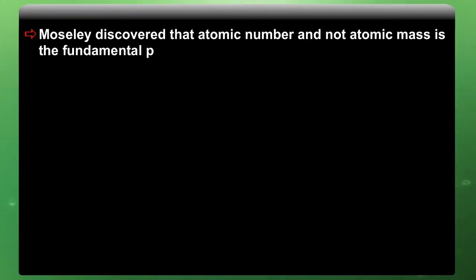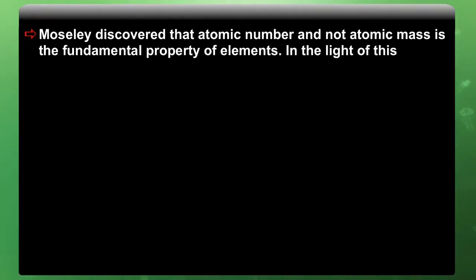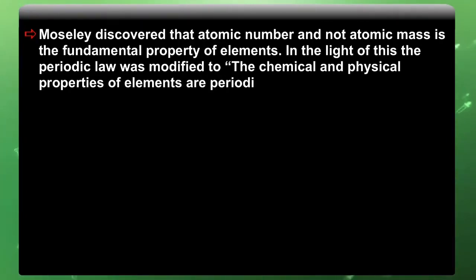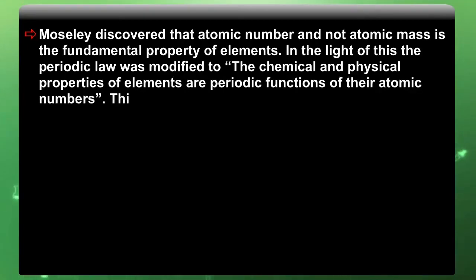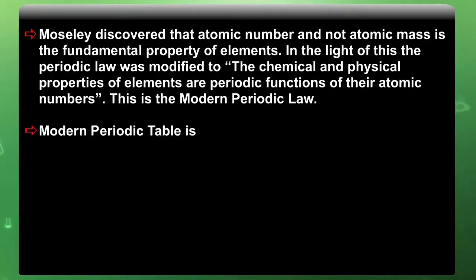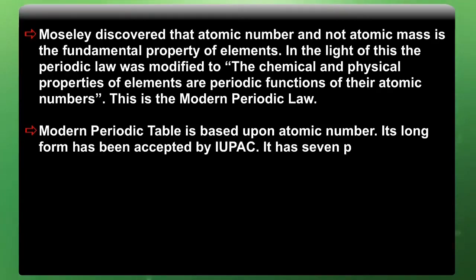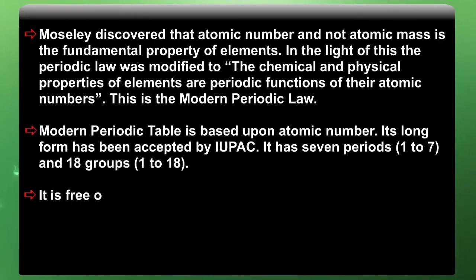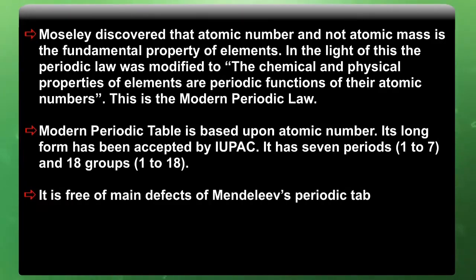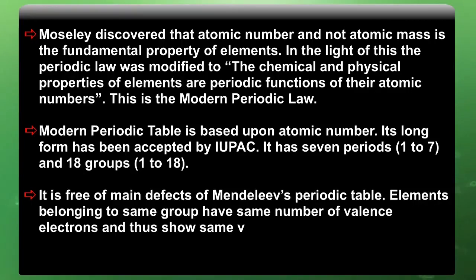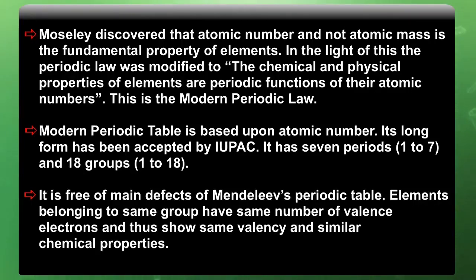Moseley discovered that atomic number and not atomic mass is the fundamental property of elements. In light of this, the periodic law was modified: the chemical and physical properties of elements are a periodic function of their atomic numbers. This is the modern periodic law. The modern periodic table is based upon atomic number; its long form has been accepted by IUPAC. It has seven periods (1 to 7) and 18 groups (1 to 18). It is free of the main defects of Mendeleev's periodic table. Elements belonging to the same group have the same number of valence electrons and thus show the same valency and similar chemical properties.